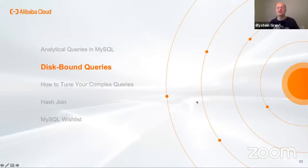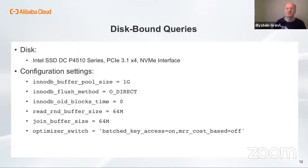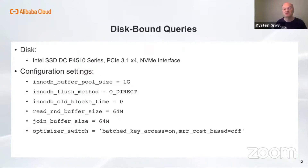So far we've shown results from running with all data in memory, and we will now discuss issues related to disk-bound queries. We are using a pretty fast SSD disk with an NVMe interface and a buffer pool of only 1 GB so that most data will have to be fetched from disk. It is important to use O_DIRECT in this case; otherwise the data will be cached in the file system buffer. My machine has 256 GB of memory, so I would need several terabytes of data to simulate a disk-bound system without using O_DIRECT.